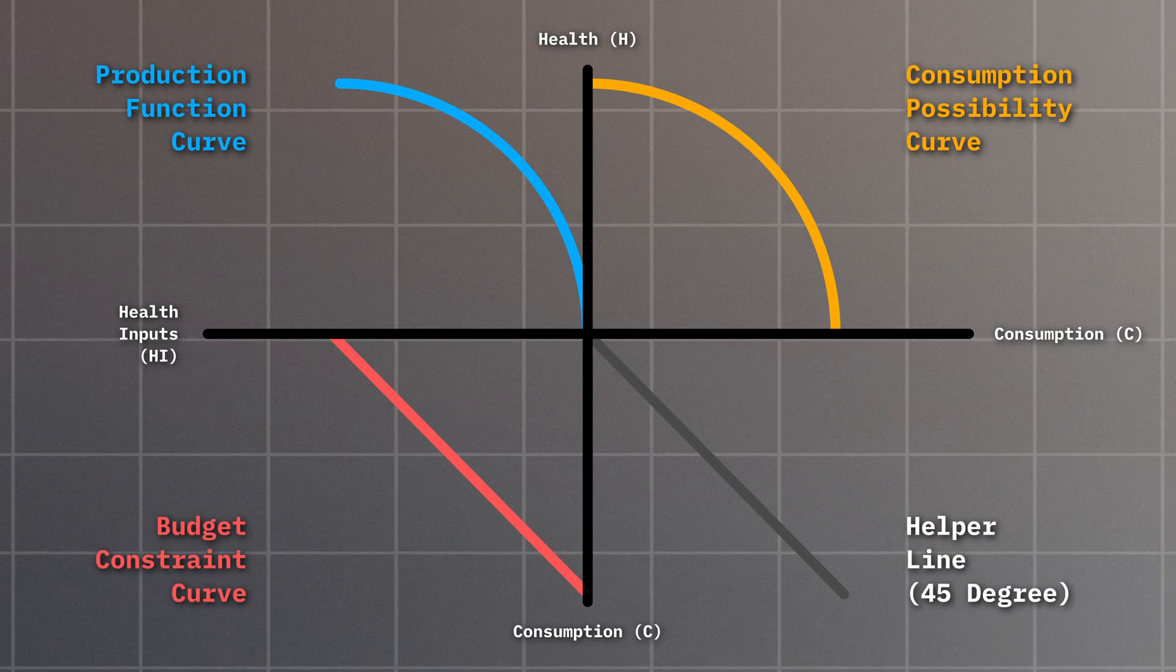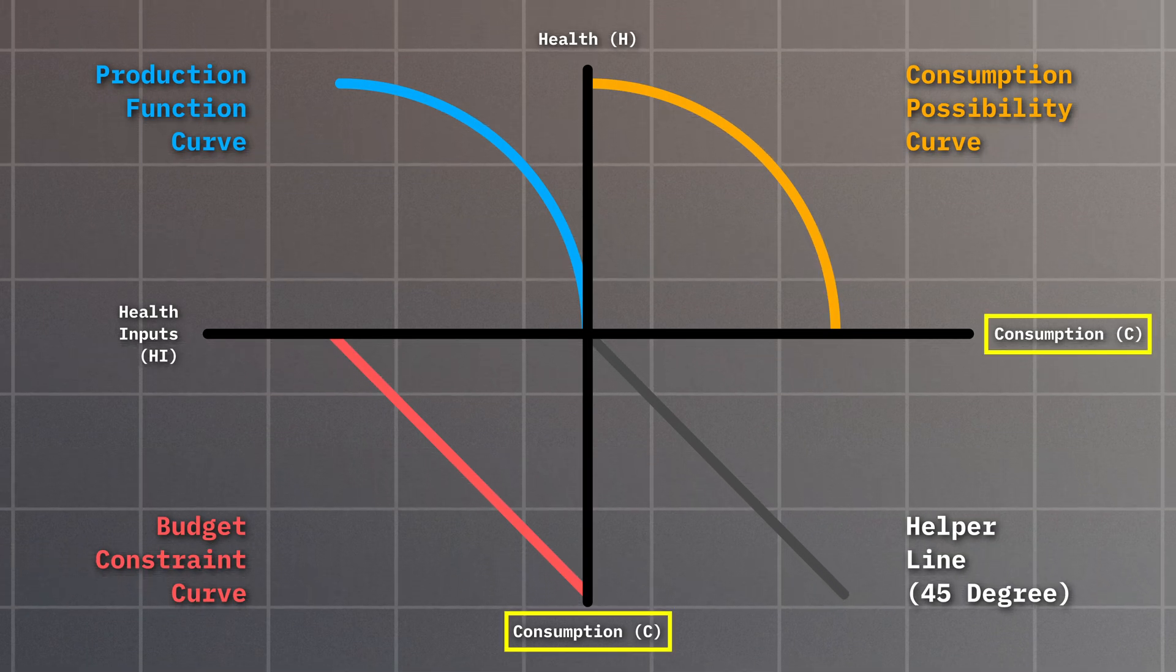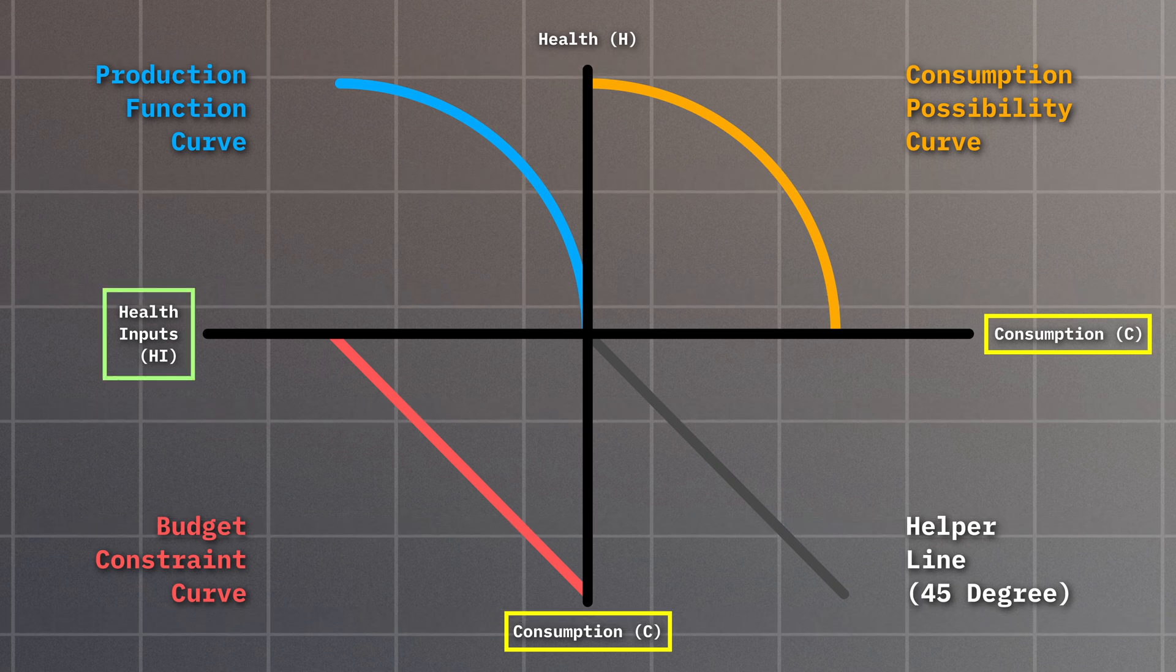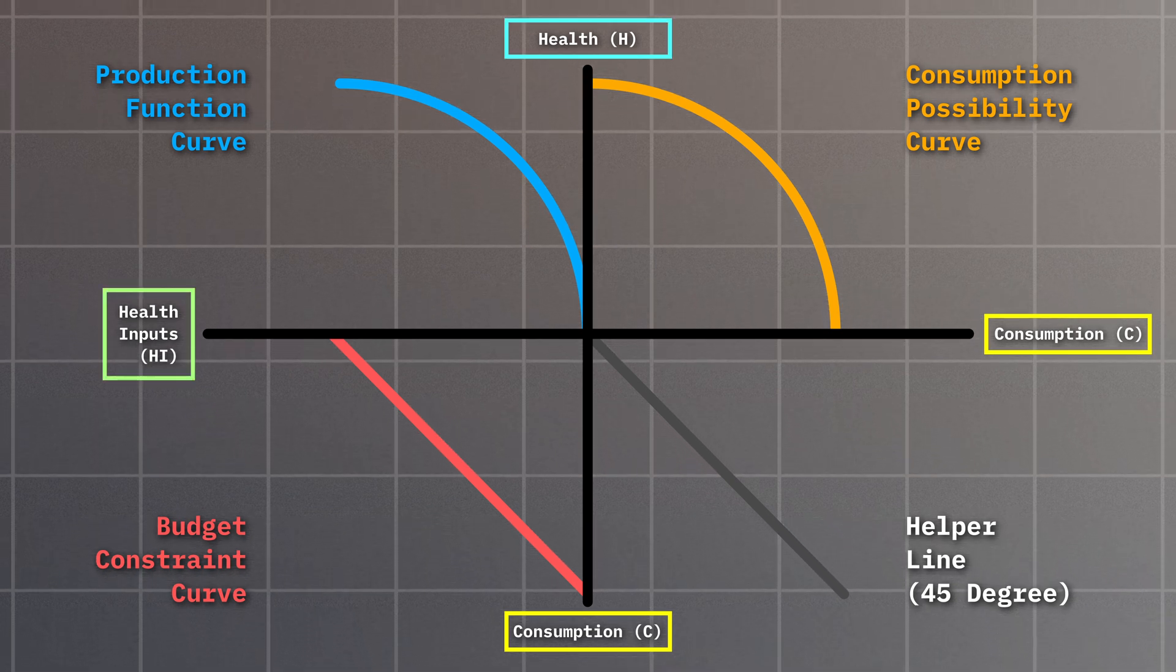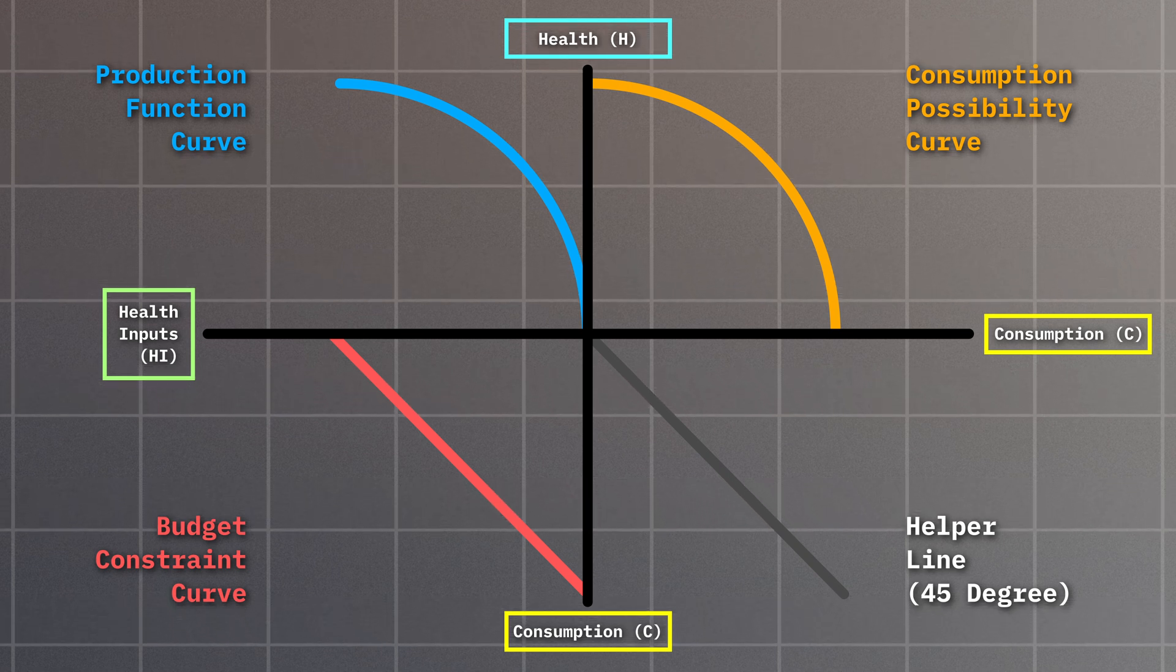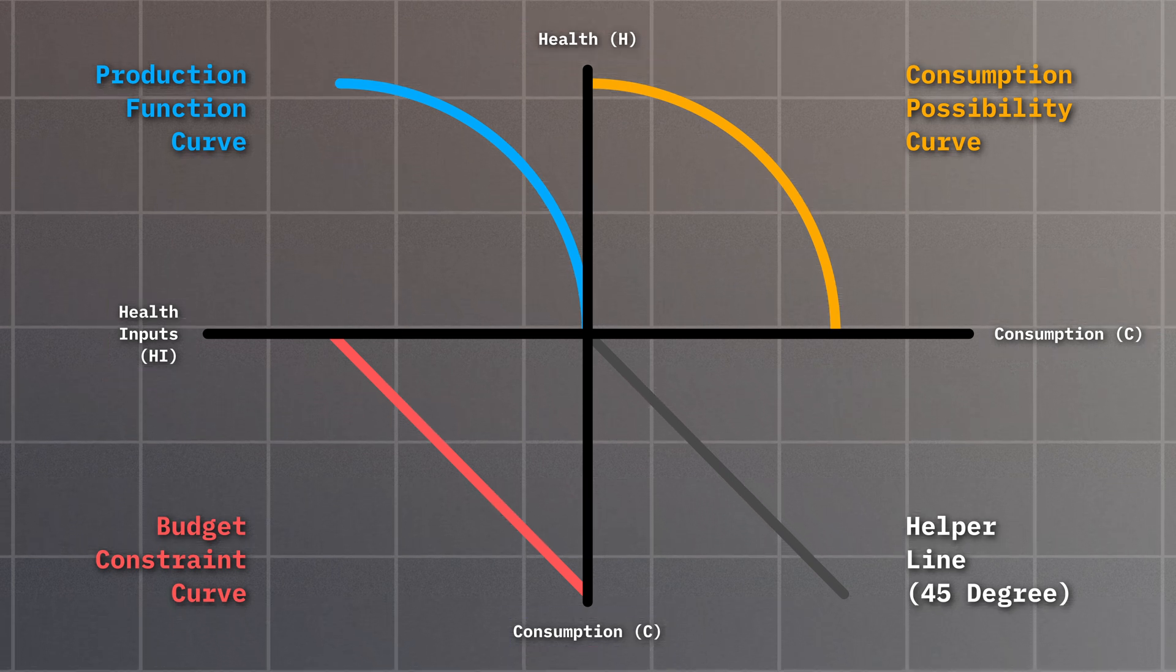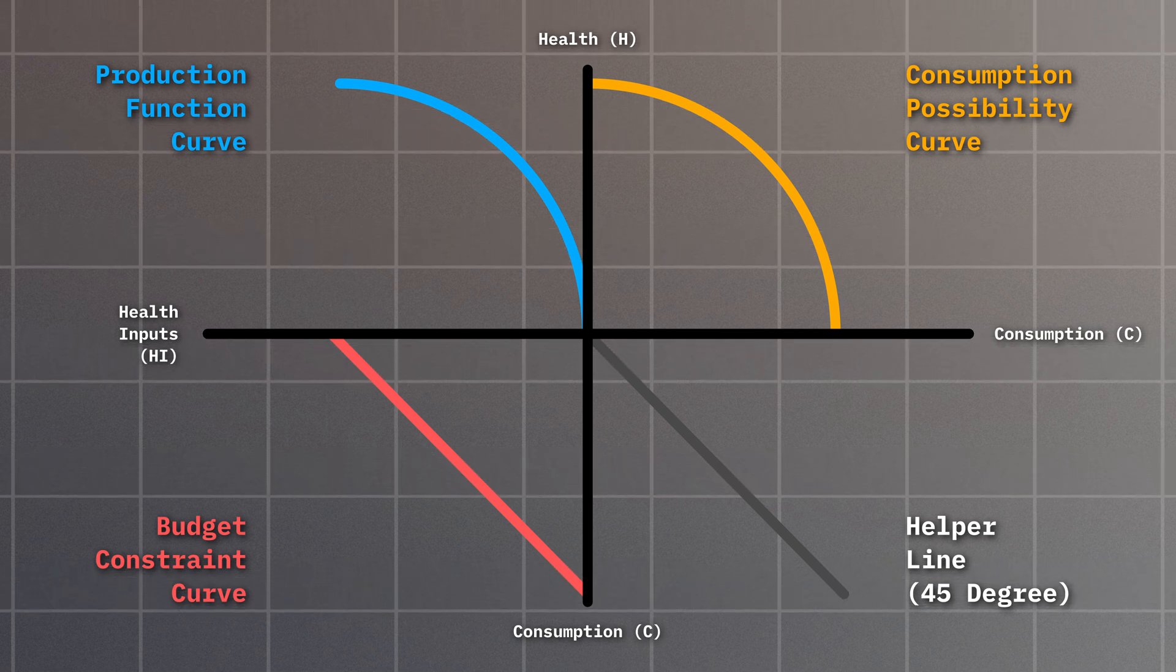One thing you may notice is that our x and y-axis have three labels: Consumption, which shows up twice in our plot, health inputs, and health. This is a little odd, given that x and y plots usually only have two labels, one for the x-axis and one for the y-axis. You'll see why this is a feature in a minute, but let's start by looking at each quadrant more closely to better understand the framework.